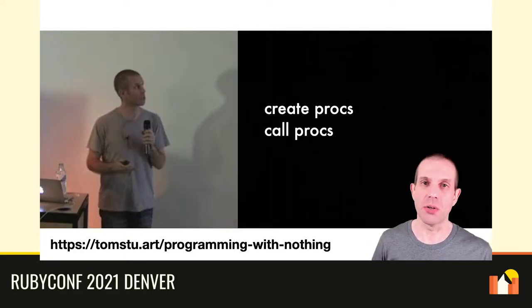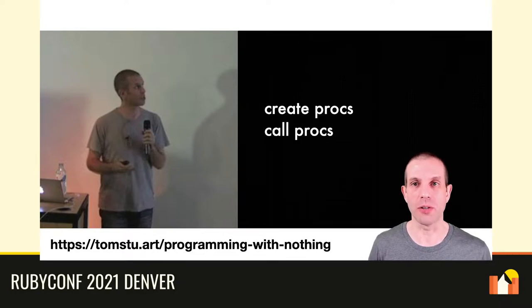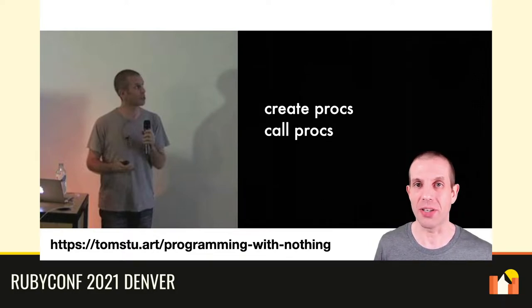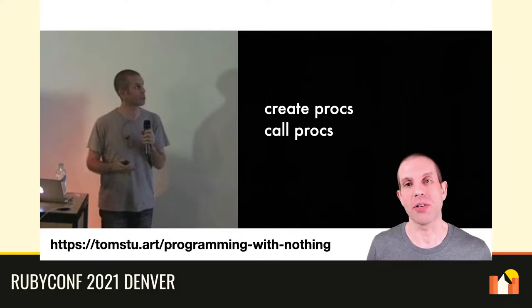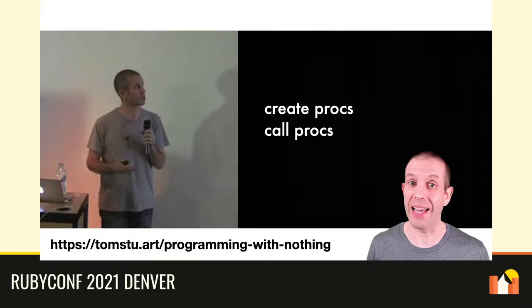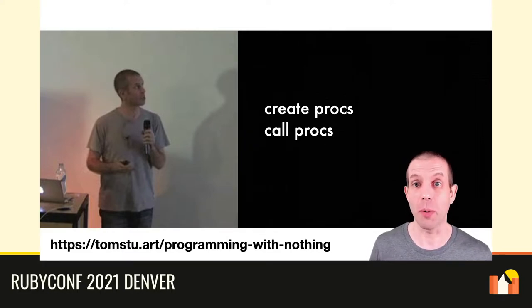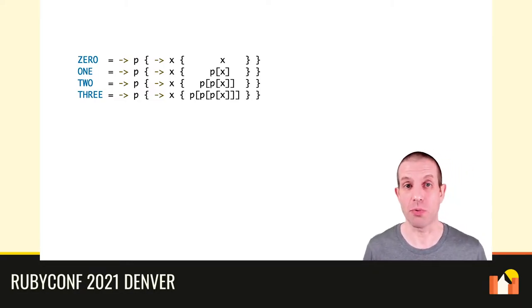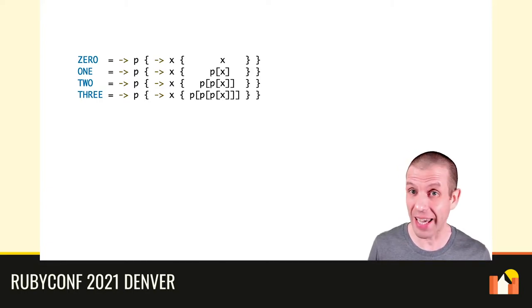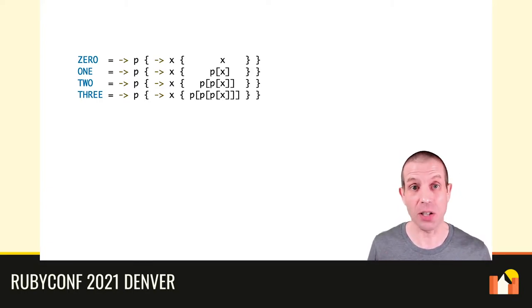In that talk, I showed that we can still write useful programs in Ruby if we only allow ourselves to create procs and call procs. And that's because we can use procs to encode any data structure, and then also use procs to implement operations on those encoded data structures. For example, here's one way to encode a number as a proc that you call once with a function p, then again with an argument x, and it calls p on x a fixed number of times.